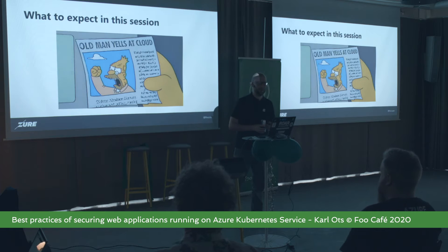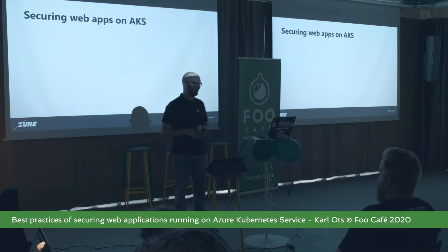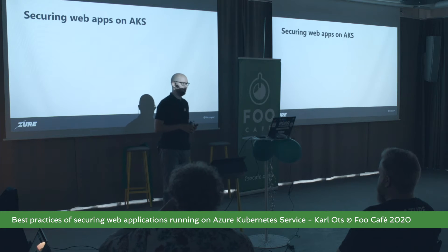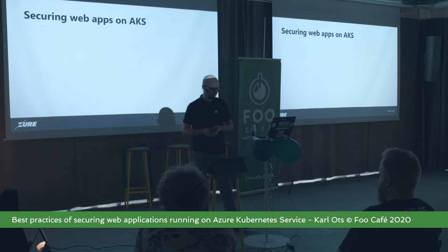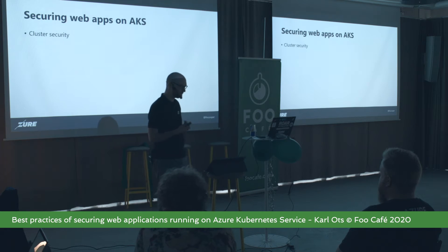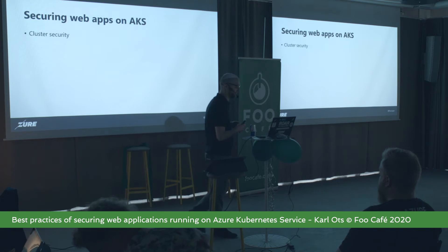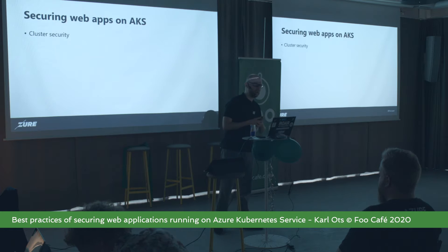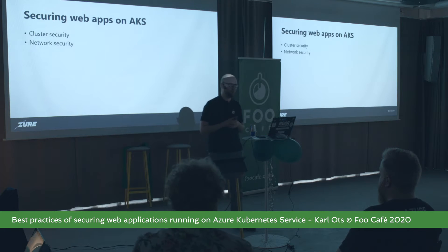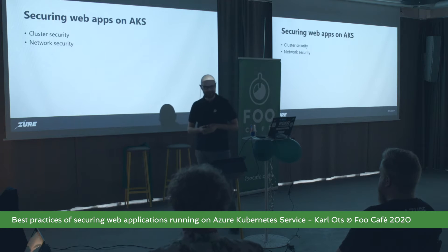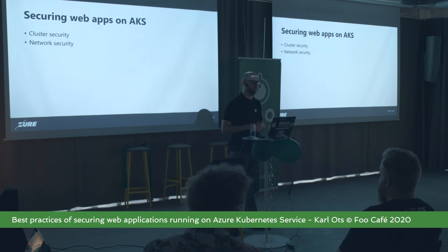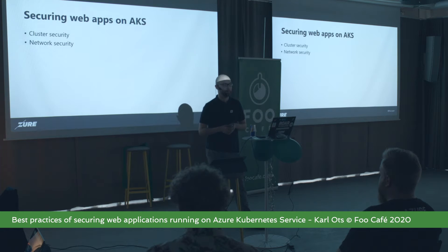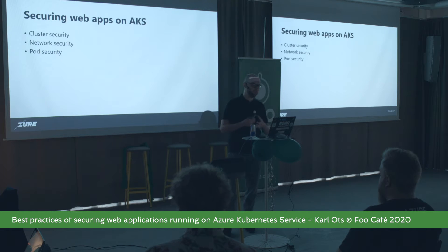Let's start talking about securing web apps on AKS. I've chosen a few different topics — this is not end-to-end even from a specific security point of view, and we will still run out of time. I'm starting with cluster security and access control: how do I access my Azure Kubernetes cluster, and what authentication and authorization considerations do I have? Then we'll cover network security for web apps, Kubernetes pod security, and a bit of the DevOps side as well.